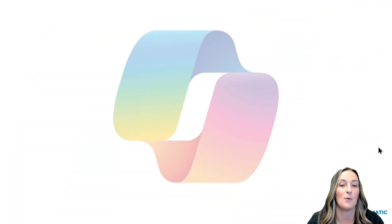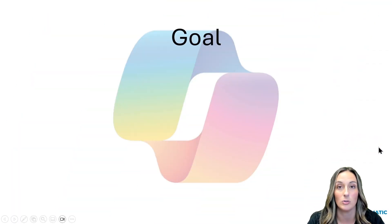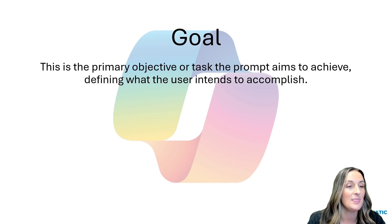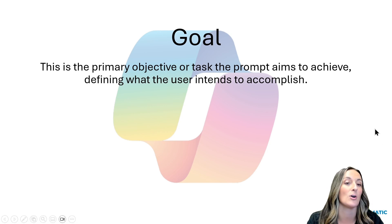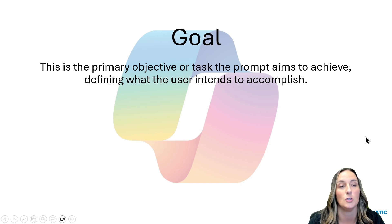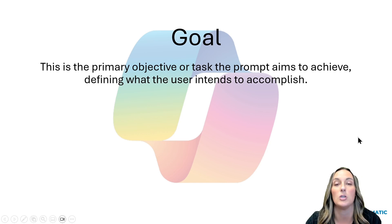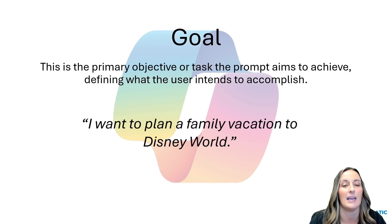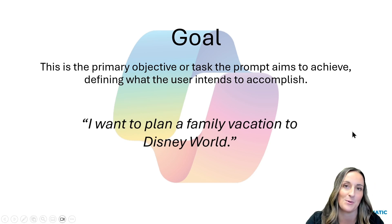First up, we have a goal. You should always have a goal to start off your prompt. This is the primary objective or task that the prompt aims to achieve — it defines what the user intends to accomplish. An example of this is: I want to plan a family vacation to Disney World.